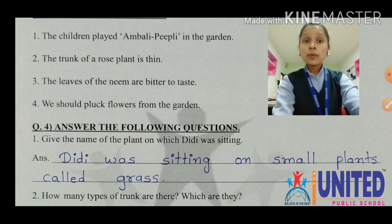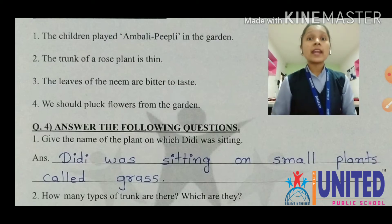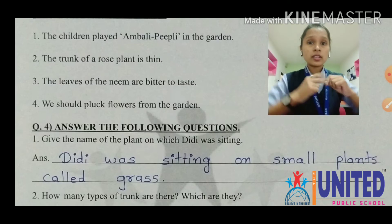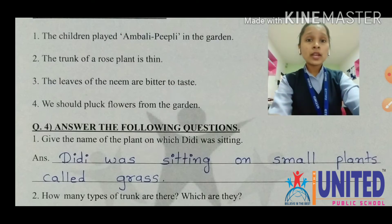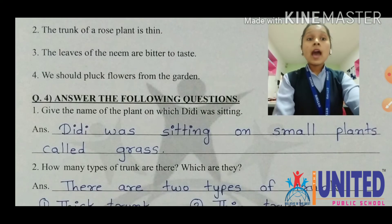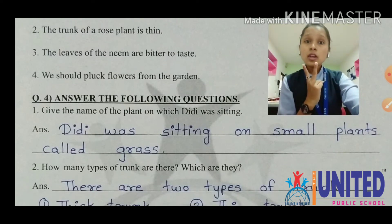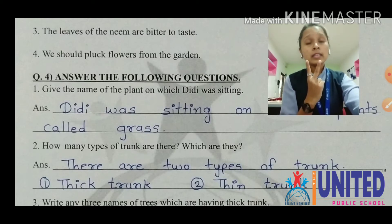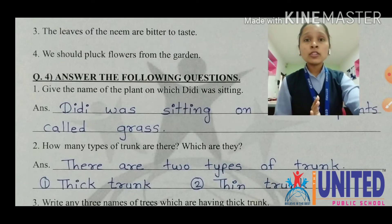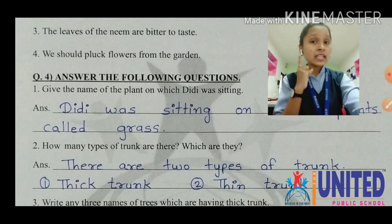Second: how many types of trunks are there and which are they? There are two types of trunk. One is thick trunk — T-H-I-C-K, thick trunk. And second is thin — T-H-I-N, thin trunk. The trunk spelling is already given in the question, so don't make mistakes with spellings.